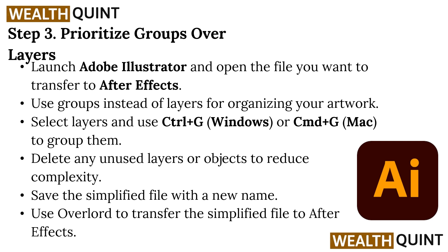Step 3: Prioritize Groups Over Layers. Launch Adobe Illustrator and open the files you want to transfer to After Effects. Use groups instead of layers for organizing your artwork — select the layers and use Ctrl+G on Windows or Command+G on Mac to group them. Delete any unused layers or objects to reduce complexity, then save the simplified file with a new name. Use Overlord to transfer the simplified file to After Effects.